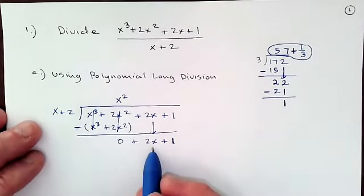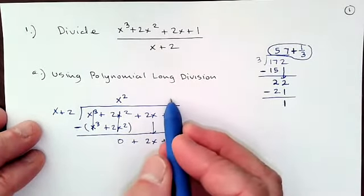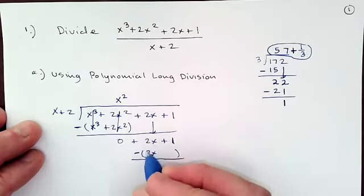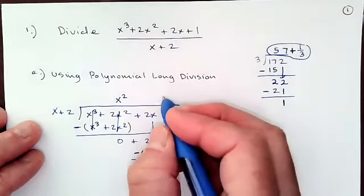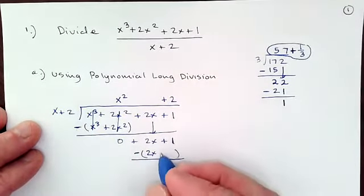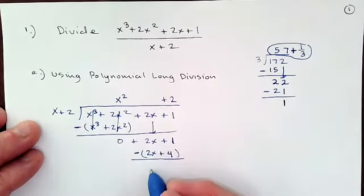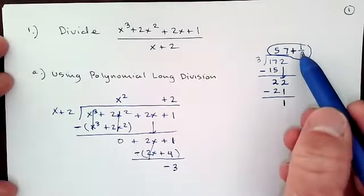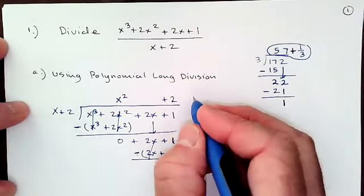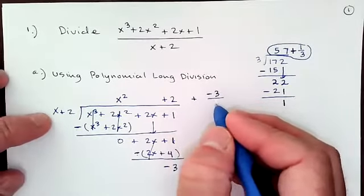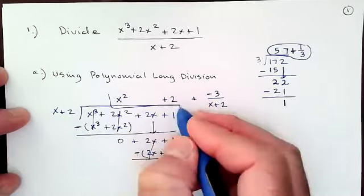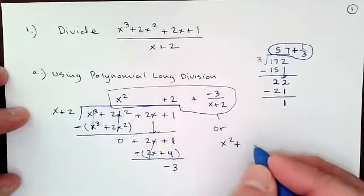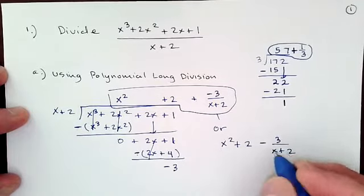We still have 2x plus 1, and we repeat the process. Now I'm looking for something that when multiplied by x plus 2 generates a 2x so it cancels. If I put plus 2: 2 times x plus 2 gives me 2x plus 4. 2x minus 2x cancels, and 1 minus 4 gives a remainder of negative 3. So we write the answer as x squared plus 2, plus negative 3 over x plus 2 — or equivalently x squared plus 2 minus 3 over x plus 2. Either form is fine.